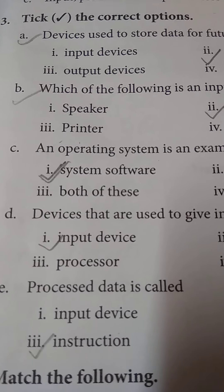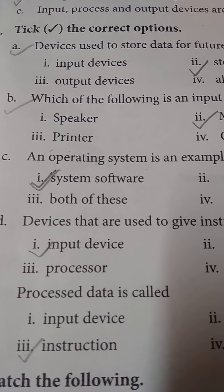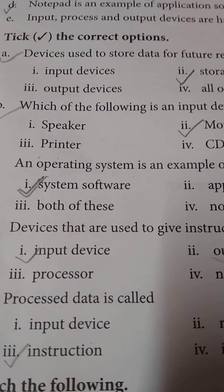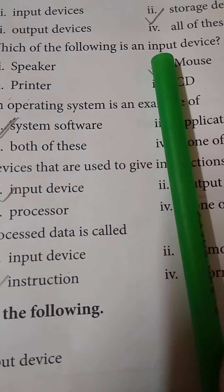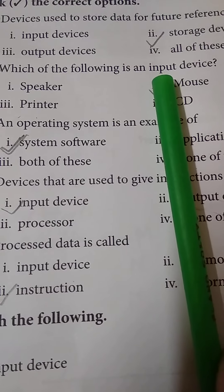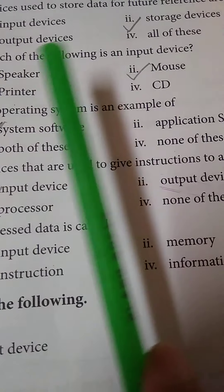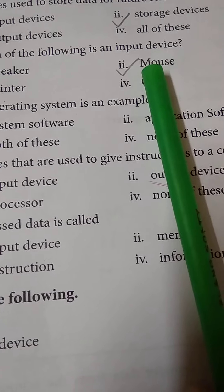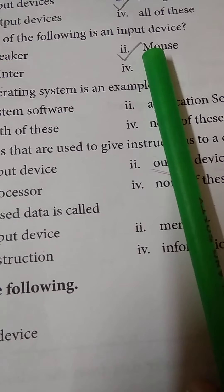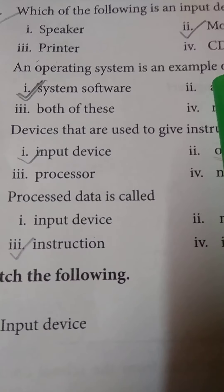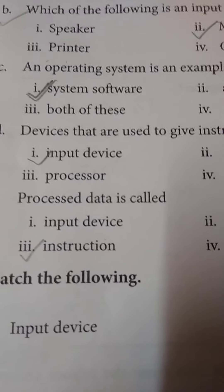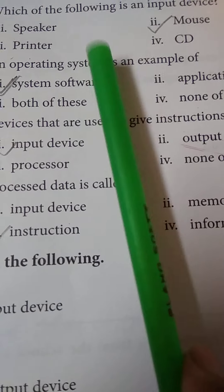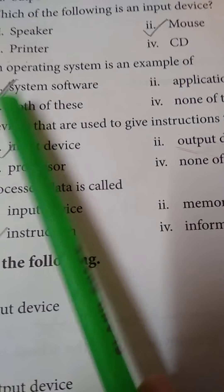Number 3: Take the correct option. A: A device used to store data for future reference is called a storage device. B: Which of the following is an input device? Speaker, mouse, printer, or CD? Mouse is the input device, so write the second option, mouse. C: An operating system is an example of which? System software, application software, both, or none? It is system software, so tick system software.